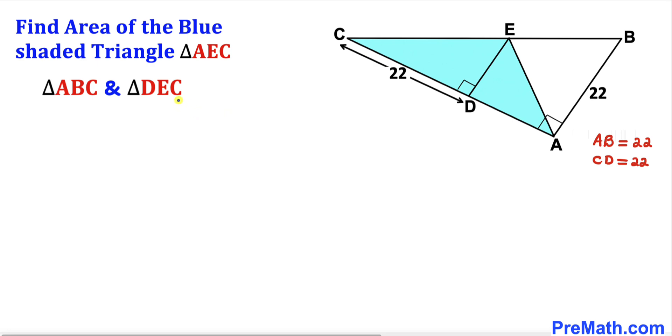Let's focus on these two right triangles ABC and DEC. We know both of these triangles are right triangles, that means these are 90 degree angles, and moreover, this angle C is in common between these two triangles.